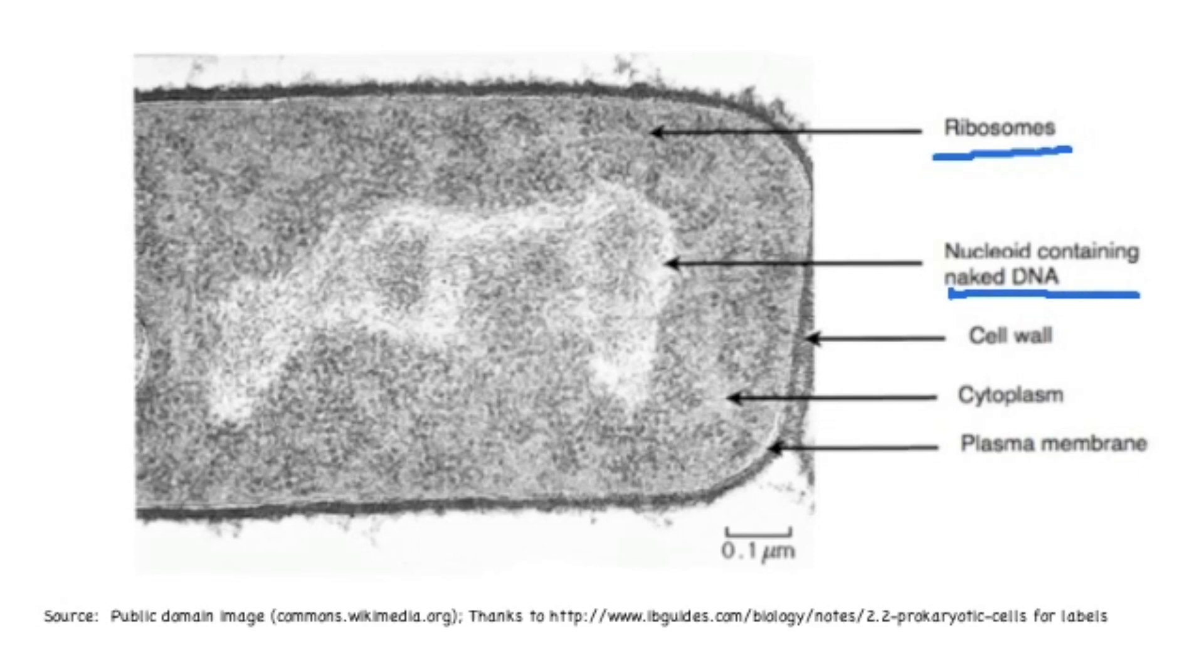The cell wall is going to be a boundary or a dark line that's closest to the outside of the cell.